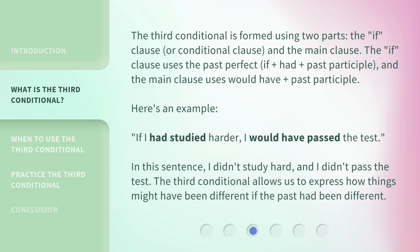The third conditional is formed using two parts: the 'if' clause, or conditional clause, and the main clause. The 'if' clause uses the past perfect — if plus had plus past participle. And the main clause uses would have plus past participle.